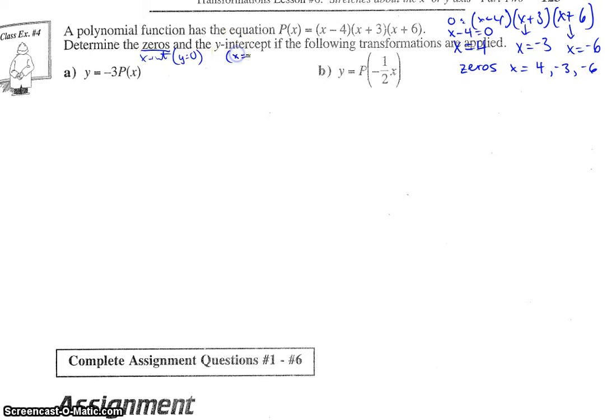To find a y-intercept, we basically know that x = 0 for y-intercepts. So if we take our original function and go P(0), put in 0 for x: (0 - 4)(0 + 3)(0 + 6), and then simplify, that'd be -4 times 3 times 6, which is going to be -72, our y-intercept of the original polynomial function.